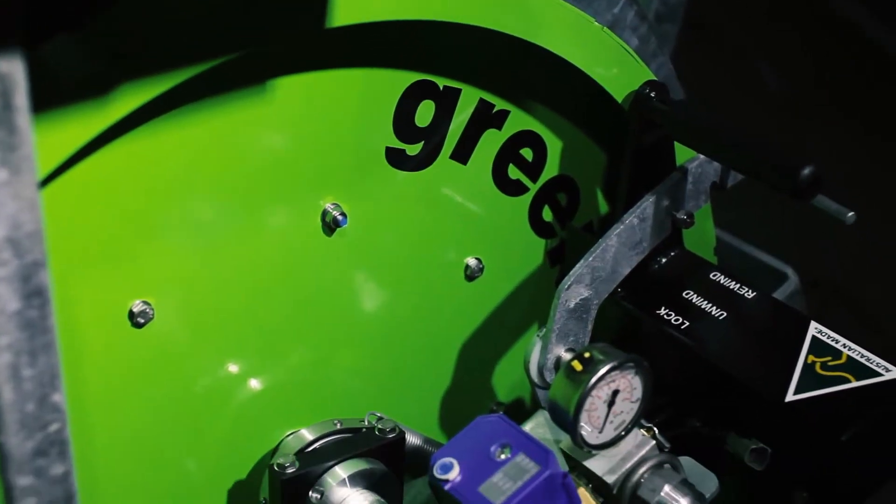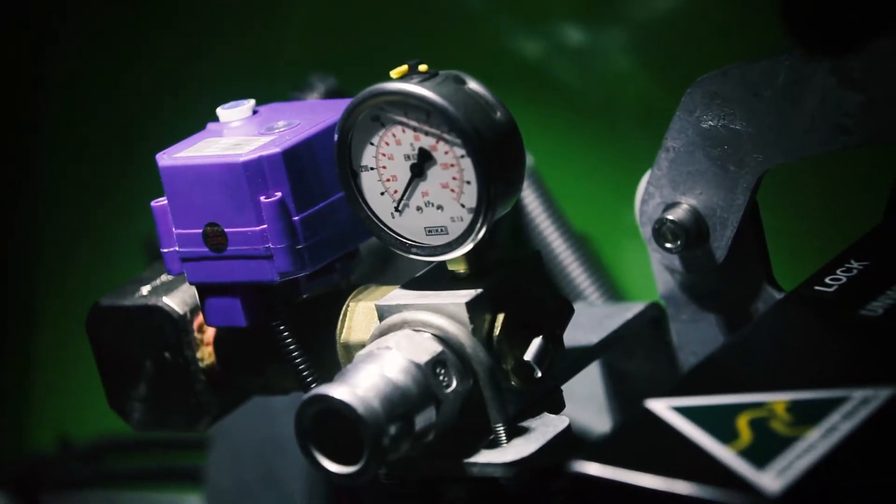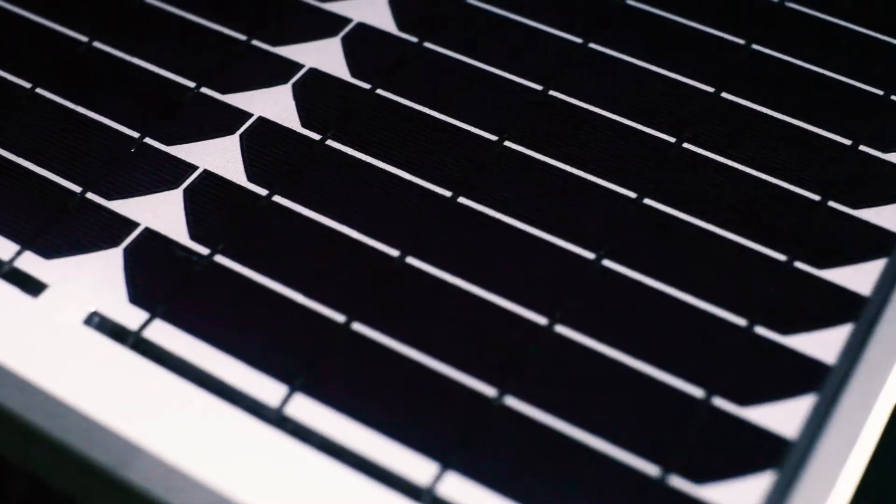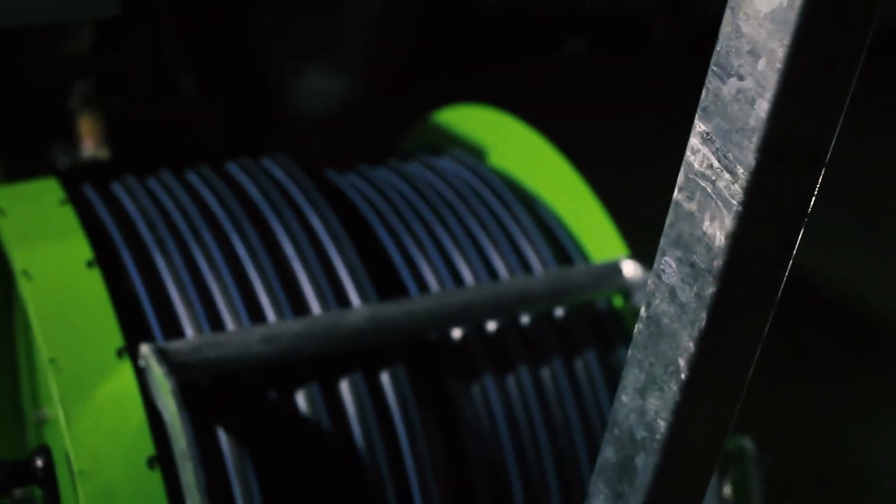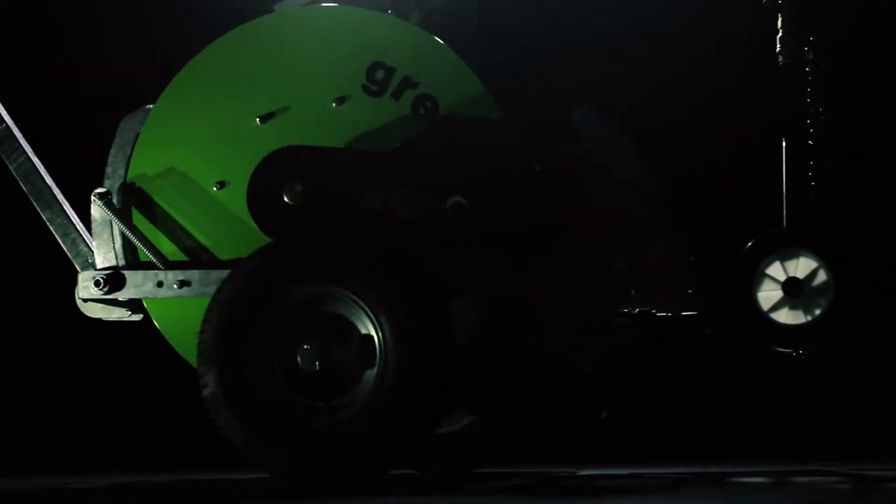What really sets Greenpro's traveling irrigators apart from the rest? The solar panel powers a 12-volt internal motor used to wind in the reel, empowering you to run on any water pressure without wasting a single drop.